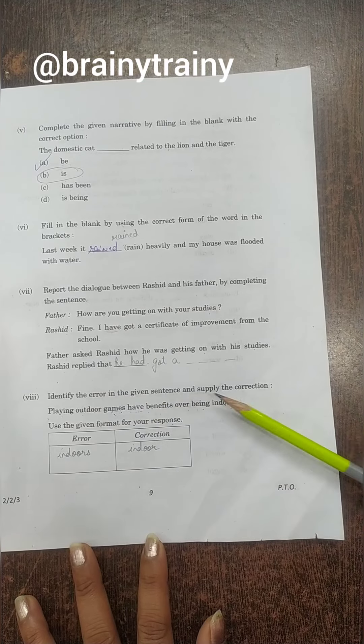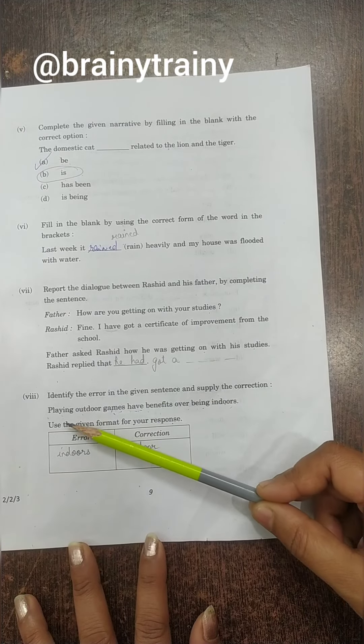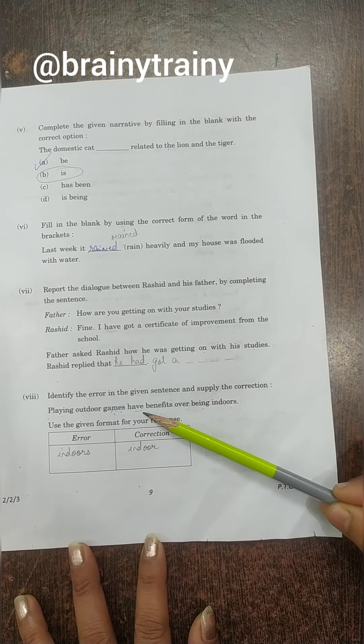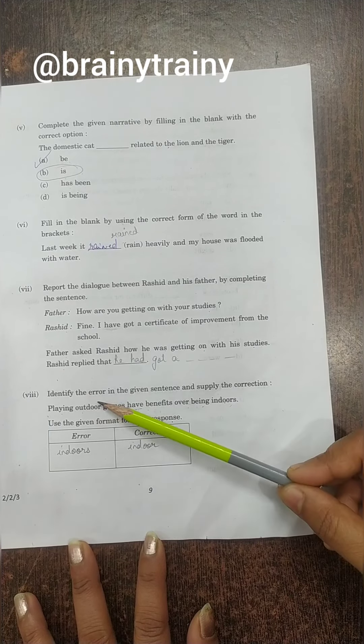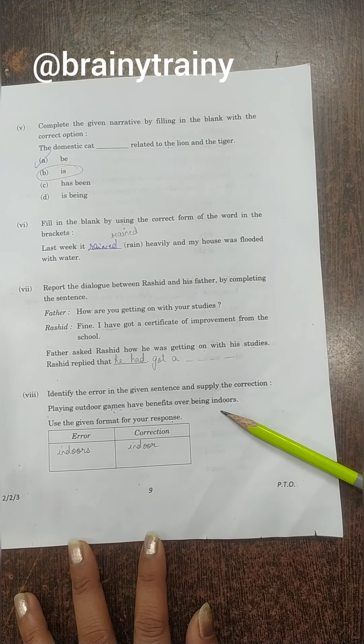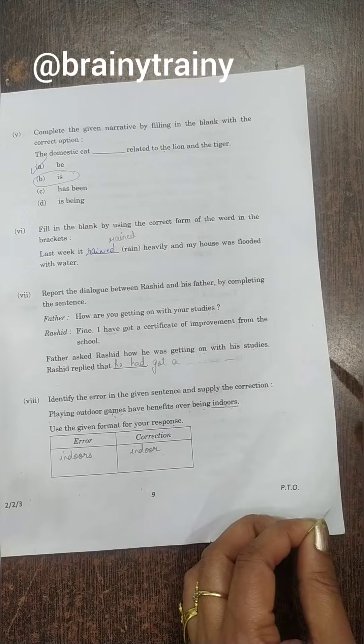Next is: Identify the error. You have to identify the error and tell the correction. The sentence is: Playing outdoor games have benefits over being indoors. Here there is outdoor games, here there is indoors. So you have to write the answer in the box.